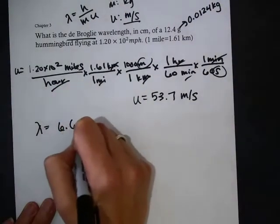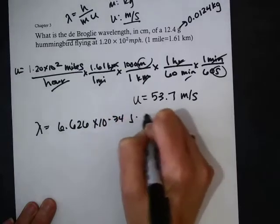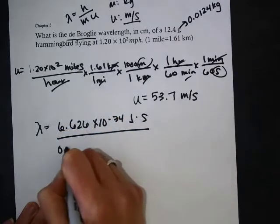So h is Planck's constant, same Planck's constant we've been using, 6.626 times 10 to the minus 34th joules times seconds.